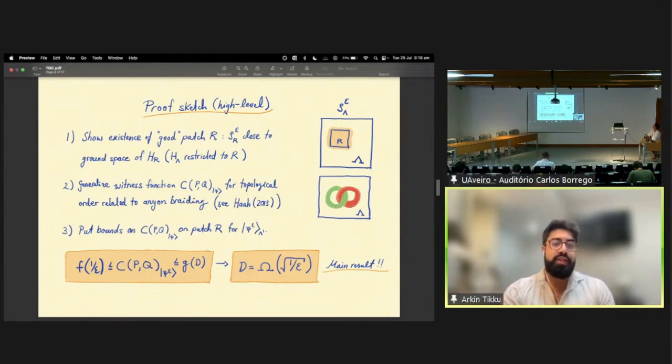I should say that this witness function might at first sight look a bit mysterious, but in some sense it is physically inspired by the non-trivial braiding statistics of the excitations that you will find in these types of models. These are sometimes referred to as anyons. The way that we arrive at our circuit depth lower bound by combining these two key ingredients is by putting upper and lower bounds on this witness function for our low energy state. We'll show how one can upper bound this witness function evaluated for our low energy state rho epsilon in terms of the circuit depth and how one can lower bound it in terms of a function that is a function of the inverse energy density of rho. These upper and lower bounds are both polynomial, which then leads us to a circuit depth lower bound of square root of one over epsilon for our low energy state.